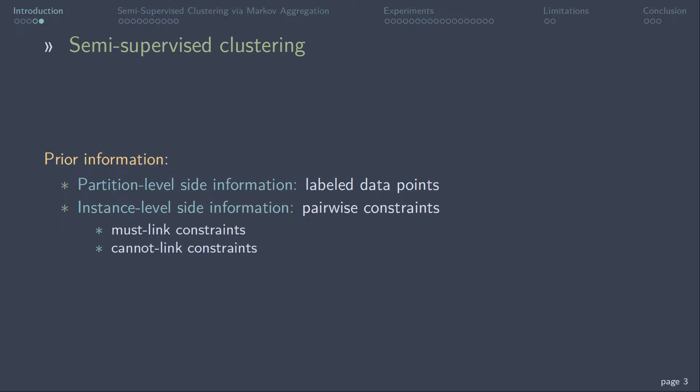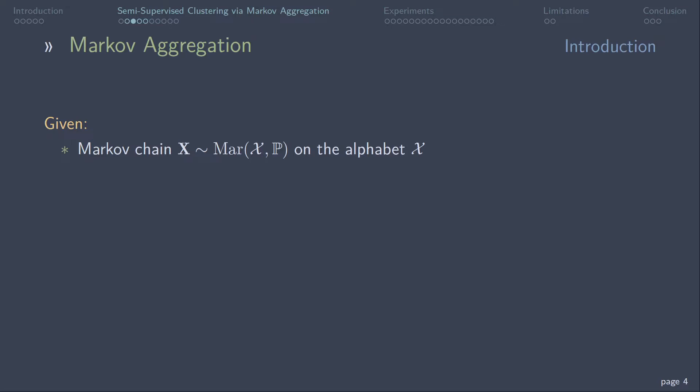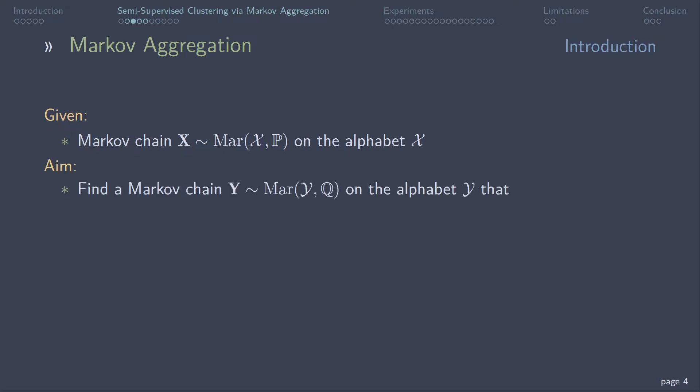Next, we'll talk about the theory behind semi-supervised clustering via Markov aggregation. Markov aggregation. Given is a Markov chain X on the alphabet curly X. The aim is to find a Markov chain Y on the alphabet curly Y that best approximates X on a smaller alphabet.